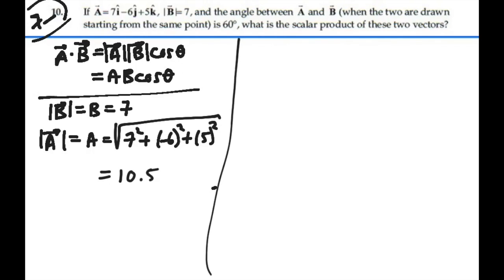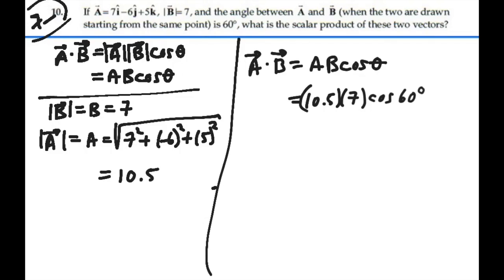So now we have that the dot product, scalar product, which is A times B cosine theta, is going to be 10.5 times 7, and the angle between these vectors was given as 60 degrees. So that is equal to 36.75.